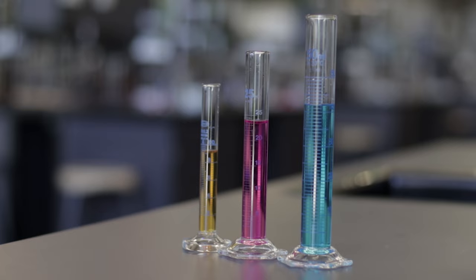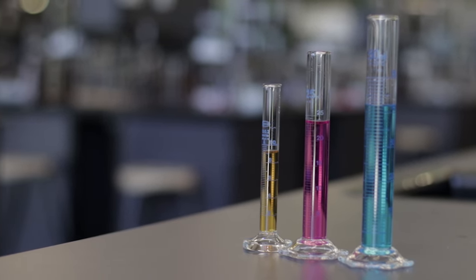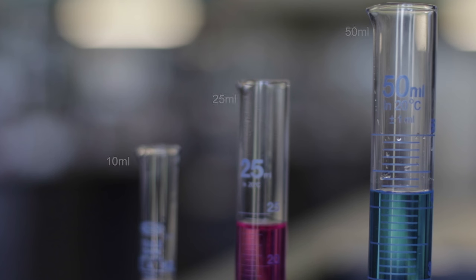A measuring cylinder is used to measure a certain volume of liquid but is not as precise as a pipette or burette. It is found in different volumes. The volume of the measuring cylinder is found here.